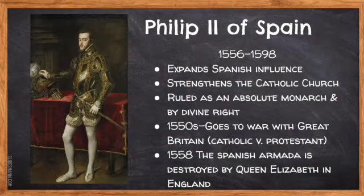One of the first absolute monarchs we need to talk about is Philip II of Spain. Philip is important because he is the first absolute monarch we're going to talk about that governs by the idea of divine right. Divine right is the idea that the monarch's power comes from God. So Philip II had absolute power and absolute control, meaning that he wielded ultimate control over the government and its people. He had the authority to lead an inquisition — to hold trials for people accused of false Catholic beliefs.